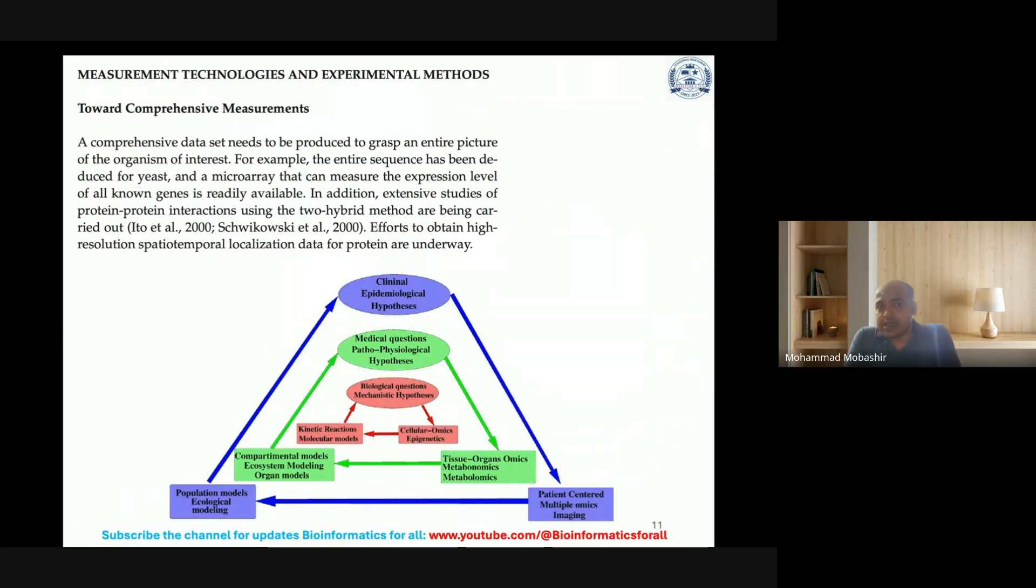Efforts to obtain high resolution, especially temporal depolarization data for proteins, are underway. But this book was written in 2001, so these are the oldest concepts. Now these things have already been advanced—for example, high throughput NGS, gene expression, gene mutation, all the proteins can be measured using proteomics techniques or all gene details can be measured using NGS and many different technologies.